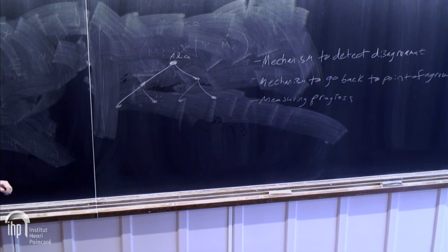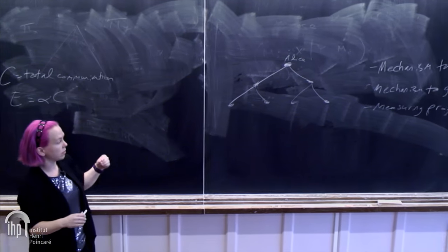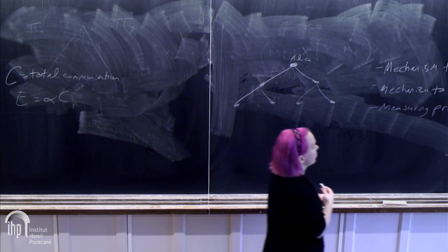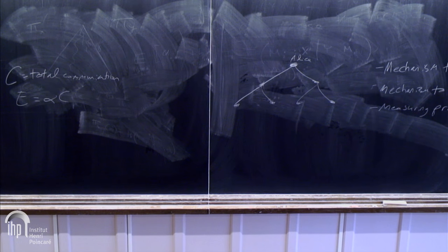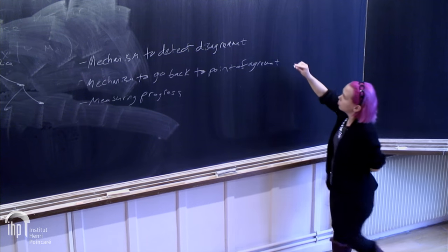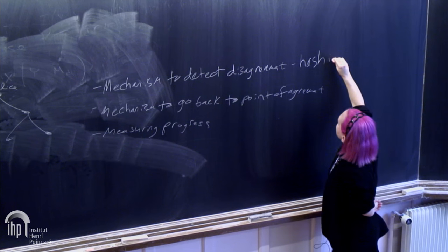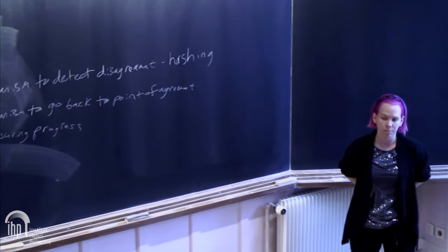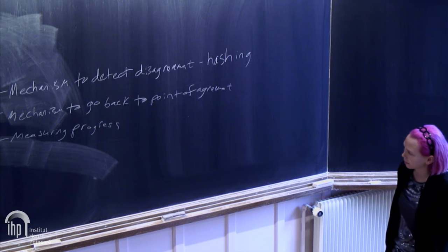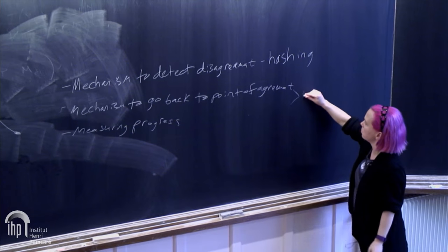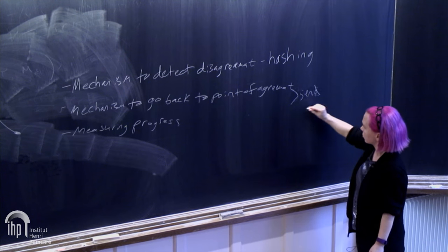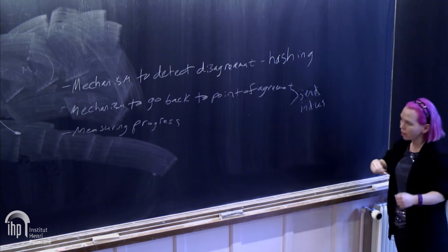The parties are each simulating what they think the transcript is so far. Their views diverge because of errors, and they need a mechanism to detect and go back and fix these points of disagreement. For computational efficiency, we're going to use as lightweight tools as possible. One very lightweight way of detecting disagreement is to use a collision-resistant hash. We'll also send indices of where we currently are and move in small steps.